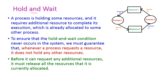Hold and wait — let us see what it is. A process is holding some resource and requires some additional resource to complete its execution, but that additional resource is already allocated to some other process. This situation is called hold and wait. In this diagram, process 1 is already holding resource 1 but is waiting for resource 2. Resource 2 is held by process 2, which is also waiting. This situation is called hold and wait.